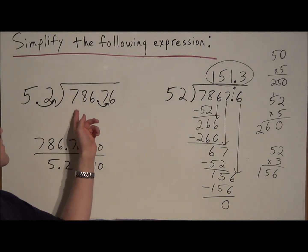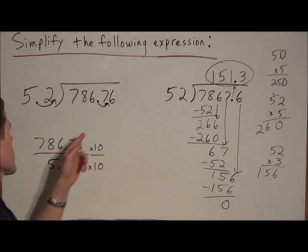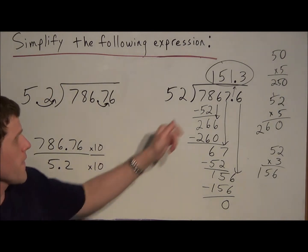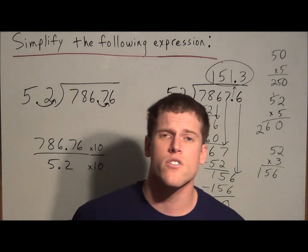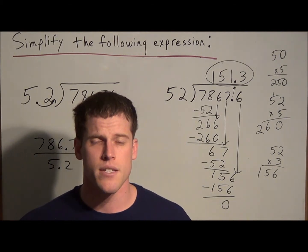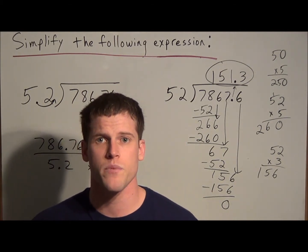So to the original problem, 786.76 divided by 5.2 is 151.3. Okay, well this is going to conclude this video on dividing decimals. Thank you all for watching, and I hope that this was helpful.